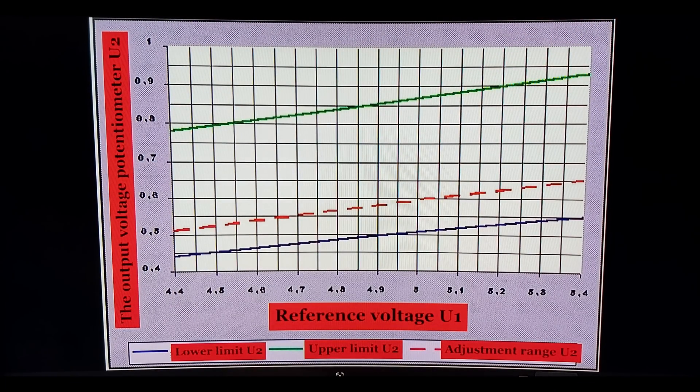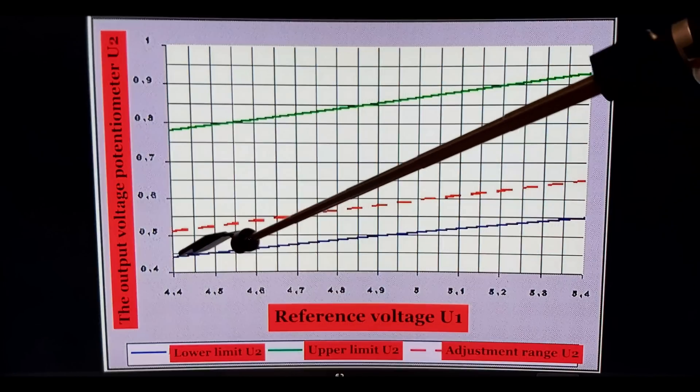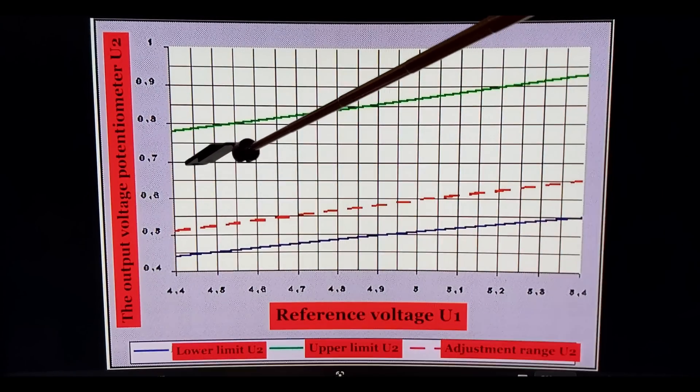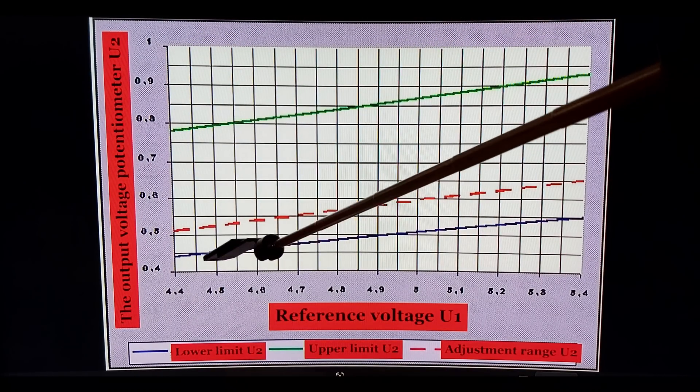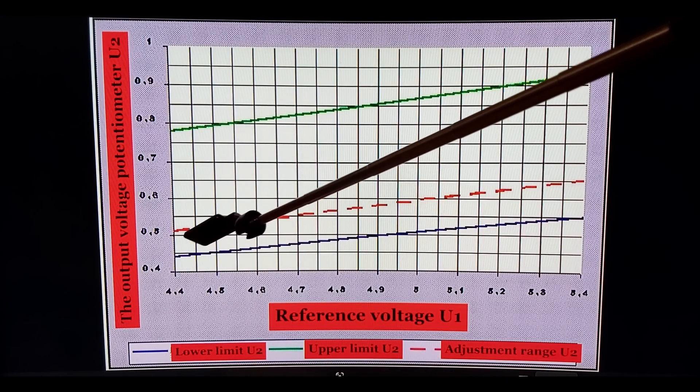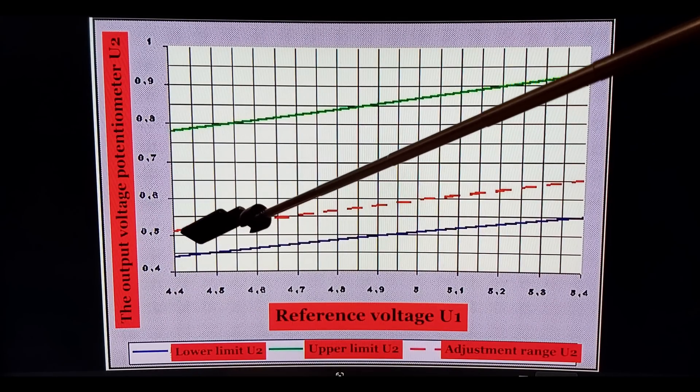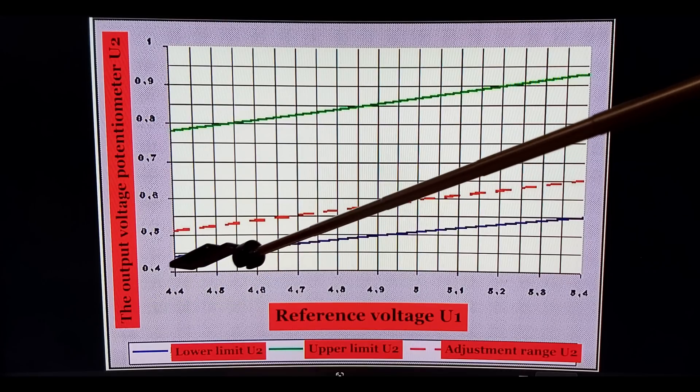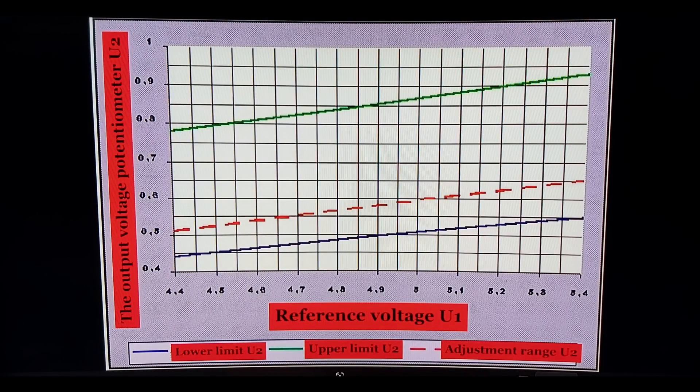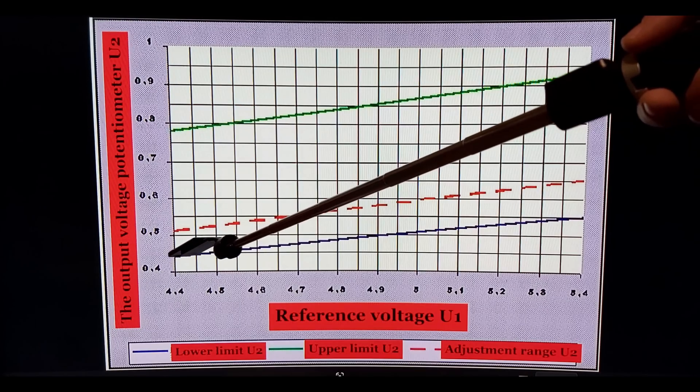And what you see here, this is called U2. That's our output voltage on the potentiometer. That's the thing we measure between contacts one and two, between the upper contact and the one in the middle.